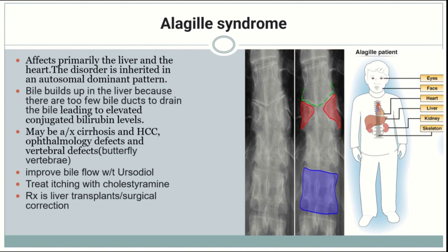You may also see ophthalmologic and vertebral defects. On vertebral imaging, you may see butterfly vertebra as shown by the highlighted red portion. The blue portion shows what a normal vertebra looks like in comparison. Treatment to improve bile flow is with ursodiol and cholestyramine for pruritus, much like many other hepatic and biliary pathologic diseases. Treatment may involve a complete liver transplant or creating artificial ducts.